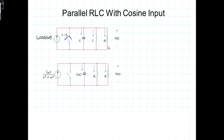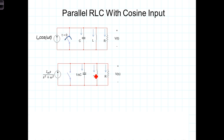We transform the circuit from the time domain into the Laplace domain. The Laplace transform of the source is this. The impedance of the capacitor is 1 over SC. We're assuming that the initial conditions — the initial voltage on the capacitor and the initial current through the inductor — are both 0. If they weren't, we would account for those initial conditions with current sources in parallel with each of the capacitor and the inductor. For simplicity, we're going to assume initial conditions are 0.